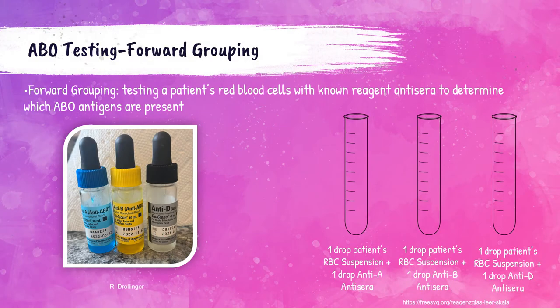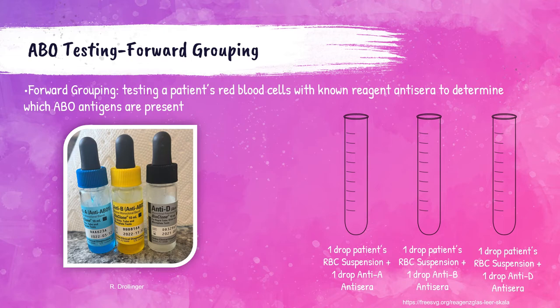I have a separate video showing the ABO testing procedure in detail — please check that out, link is below. For the forward or front typing procedure, you test the patient's red blood cells with known reagent antisera. The reagent in the blue vial contains anti-A antibodies, the yellow vial contains anti-B antibodies, and the clear reagent contains anti-D antibodies. These will always be these specific colors to avoid confusion or ABO mistyping. You will need three tubes labeled with the patient's information and whatever reagent goes in them: anti-A, anti-B, or anti-D.